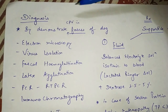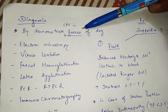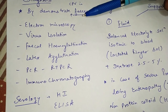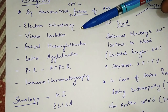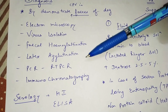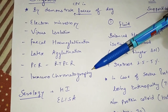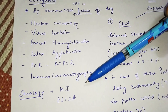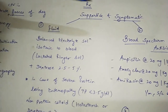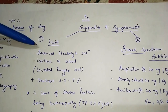For diagnosis, we can demonstrate canine parvovirus in feces of dogs using techniques such as electron microscopy, virus isolation, fecal hemagglutination, latex agglutination, real-time PCR, and immunochromatography. Serological tests like hemagglutination inhibition or ELISA can also be used.